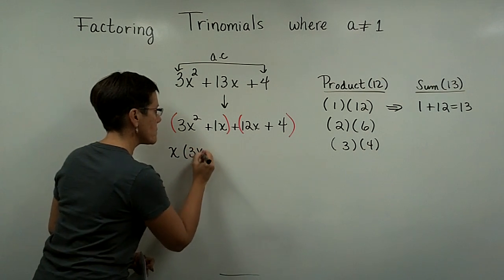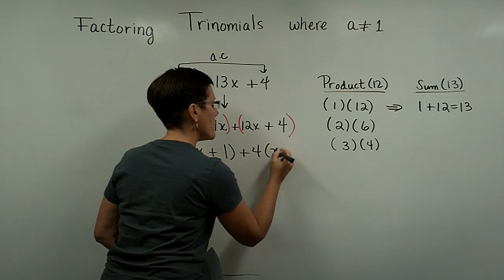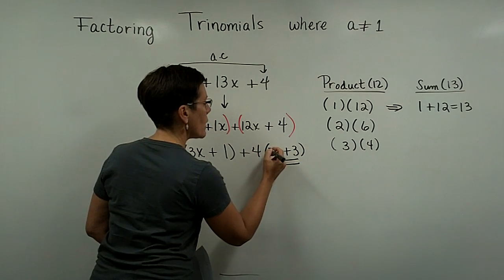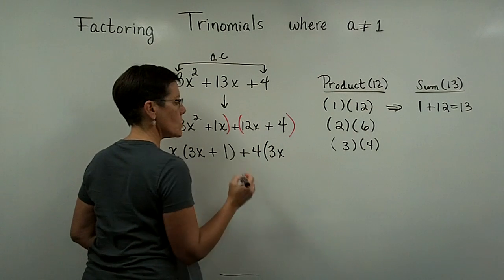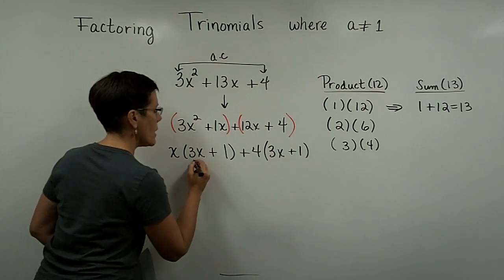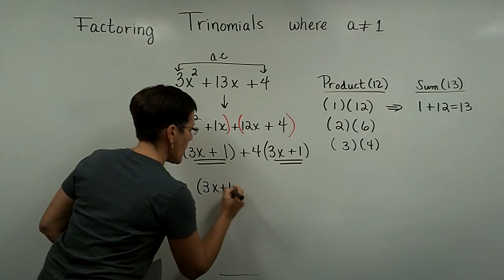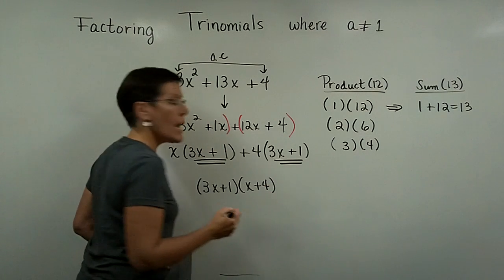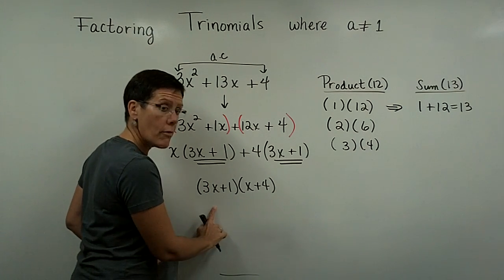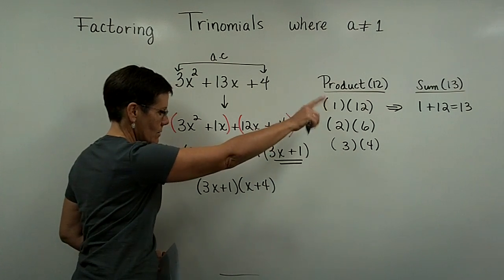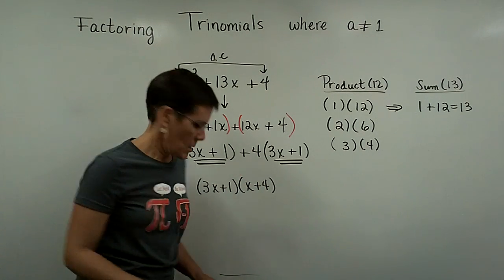I'm going to group the first two terms and the last two terms, then take the greatest common factor out of each group. From the first group, the GCF is x. From the second group, the GCF is 4 — since 4 times 3x is 12x and 4 times 1 is 4. If the trinomial is factorable, these binomials will match. I write that matching binomial once, and the x and the 4 go into the other set of parentheses. If you FOIL it out, you get 3x squared, then 12x and 1x — which add to 13x — and 1 times 4 gives the 4. We can verify it checks out.